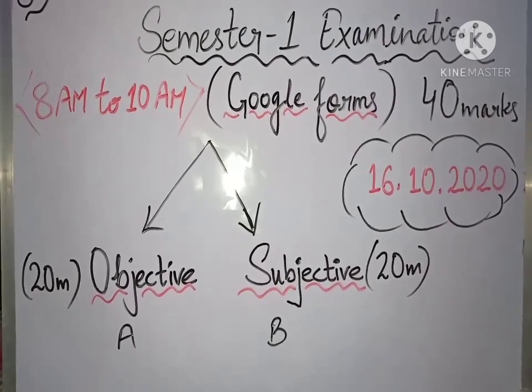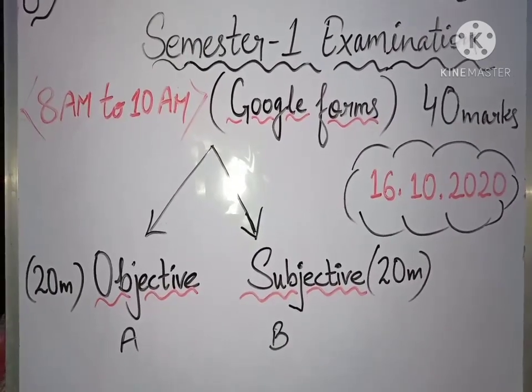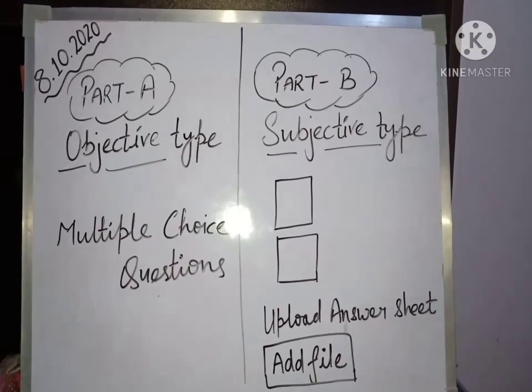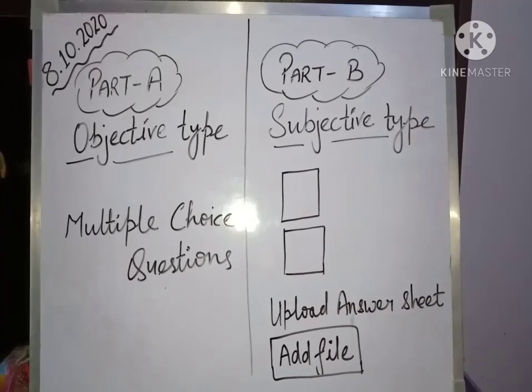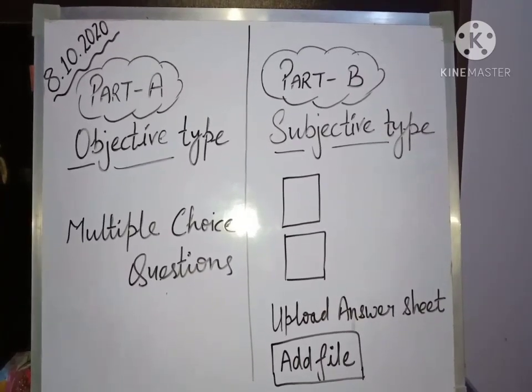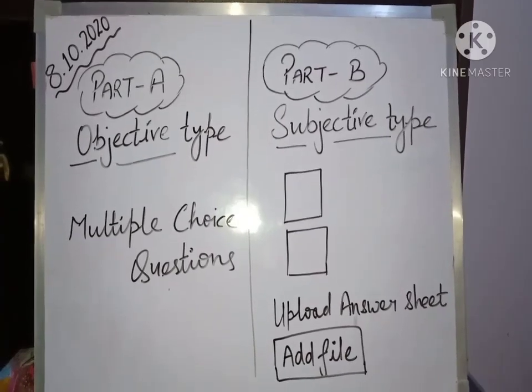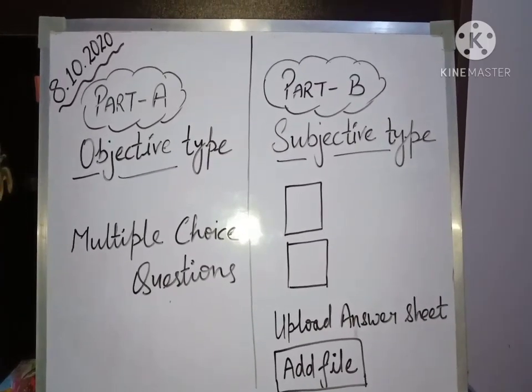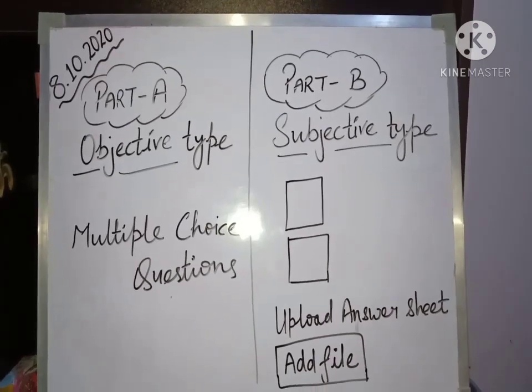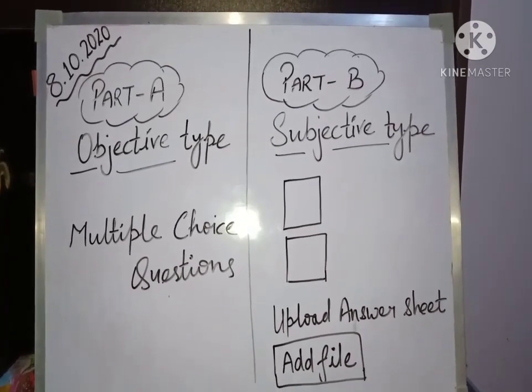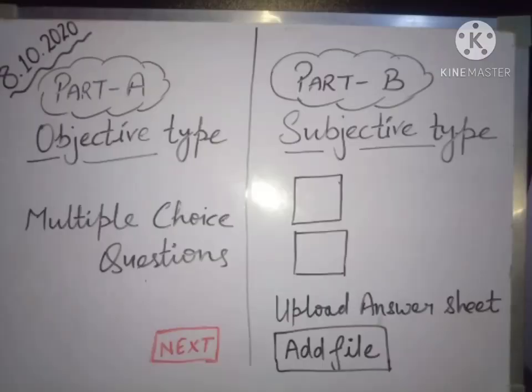Now I am going to tell you how you have to do this exam. As I already told you that there will be two parts, part A and part B. Part A will be of objective type questions and part B will be of subjective type questions. In objective type questions, there will be multiple choice questions which you have already done recently in your class test in which you will click on the correct options. And after completing the part A objective type questions, there will be a next button. But before clicking on that button, you have to make a hard copy of this part A objective type.